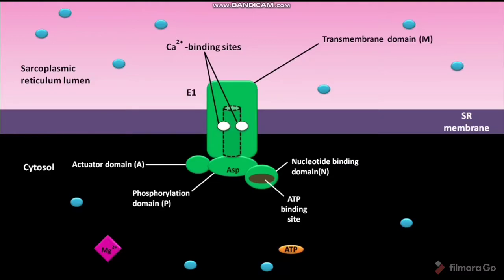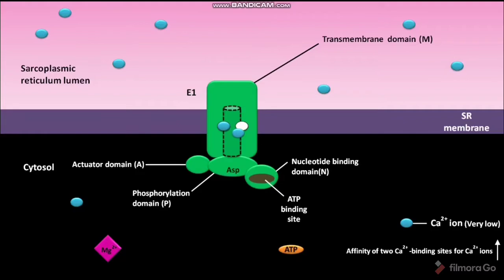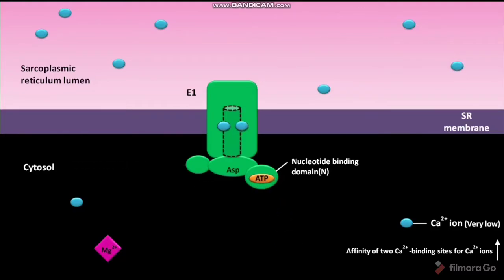In the E1 conformation, the two CA2+ binding sites located in the center of the membrane-spanning domain face the cytosol. In a contracted skeletal muscle cell, when the cytosolic calcium ion concentration is very low, the affinity of the two calcium binding sites for CA2+ ions is increased. As a result, two cytosolic calcium ions bind to the calcium binding sites in the transmembrane domain. Cytosolic ATP then binds to the ATP binding site present in the nucleotide binding domain.